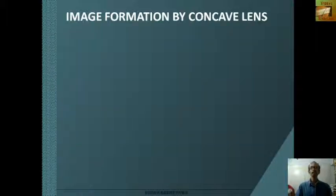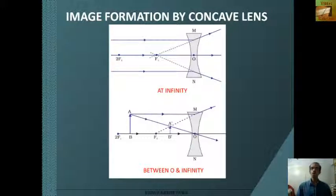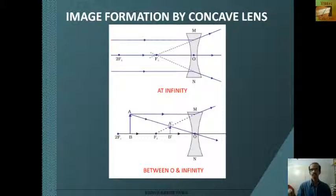Now we can see the image formation by concave lens. In case of concave lens, only two cases are considered: when the object is at infinity, and when the object is between the optic center and infinity. In the first case, a virtual erect image is formed at F1 on the same side as the object. When the object is kept between the optic center and infinity, an image is formed between the optic center and F1 on the same side. The image formed is diminished.